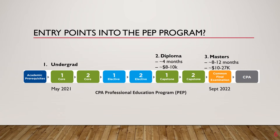Now let's talk about the entry points into the PEP program. If you only have an undergraduate degree, you would start at Core 1, and this will take approximately 17 months to complete the full PEP program and write your CFE. If you have completed your undergraduate degree and additionally spent 4 months getting a diploma, spending about $8,000 to $10,000, you would start off at Capstone 1. If you've completed your undergraduate degree and then pursued a master's degree in accounting — taking 8 to 12 months and spending $10,000 to $27,000 — you would be eligible to write the CFE upon graduation.